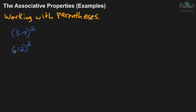And then we're going to use the exponent. The exponent tells you to multiply whatever is inside the parentheses by itself. The exponent tells you how many factors there are. In this case there are 2, so you do 12 times 12 — that's one factor and then the second factor.